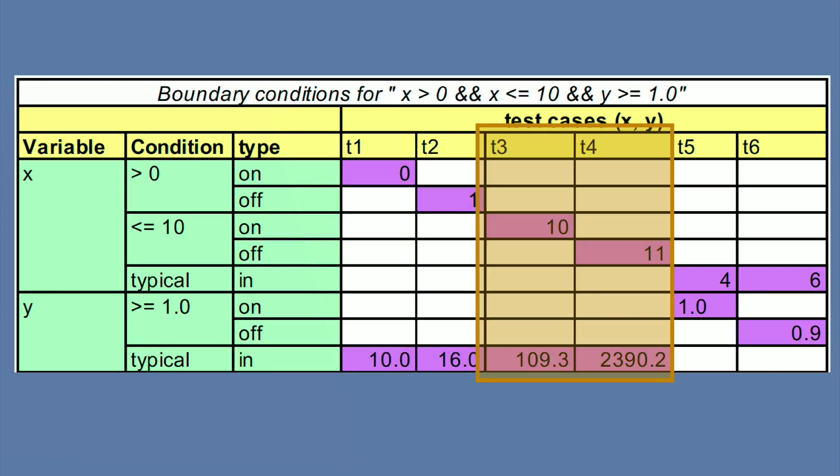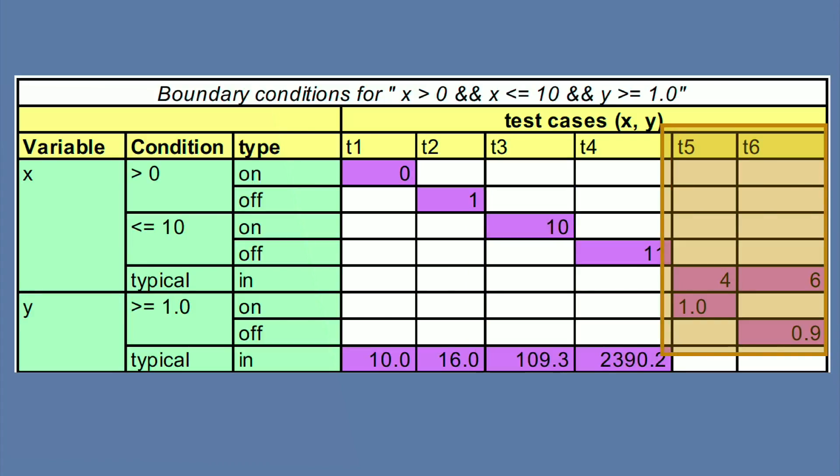Then we go to the second boundary, which is x is smaller than or equals to 10. The on point for that condition is 10, the off point is 11. For y we pick any in point, I chose 109.3, 2390.2, so completely random in points. And finally, for y, the on point is 1, the off point is 0.9, and now any in point for the x variable. And that's it, these are the six tests we should do in order to exercise the boundaries of the big condition under test.